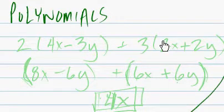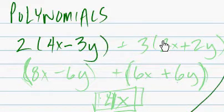Let's do 2 times 4x minus 3y plus 3 to 2x plus 2y.